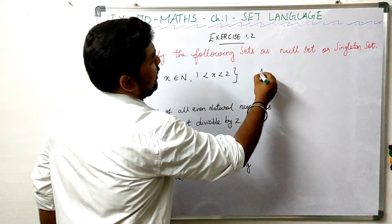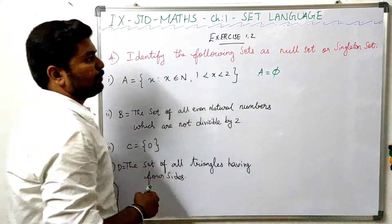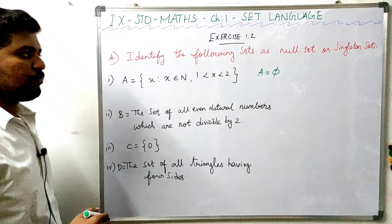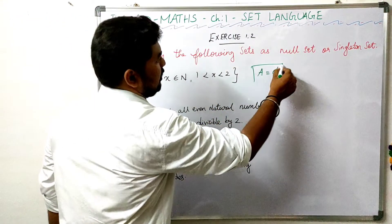Set A is equal to null set. That's all. Set A is equal to null set.